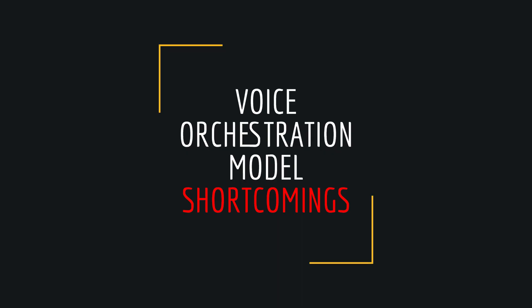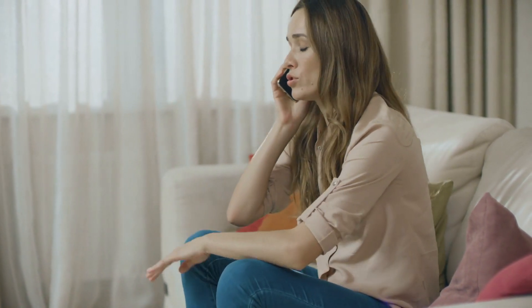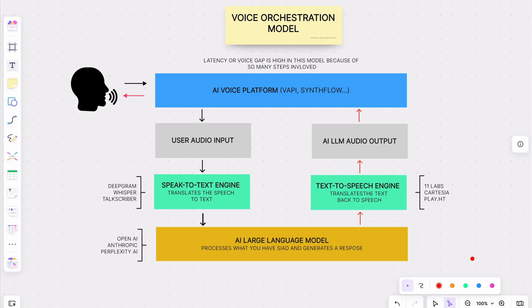Now let's talk about some shortcomings of the voice orchestration AI system. One of the major issues is latency. In voice orchestration systems, there are delays between the user speaking and the AI responding, because the system has to convert speech-to-text, process that text, generate a response, and then convert it back to speech. This can take a second or two, or even more, depending on the complexity of the interaction. For a natural human conversation, this kind of delay breaks the flow.